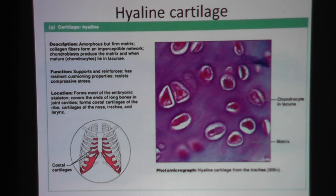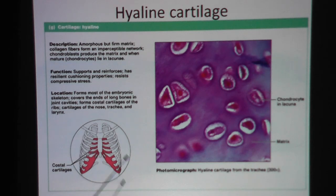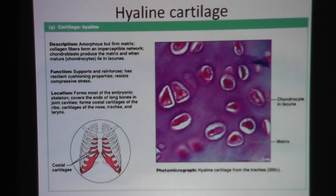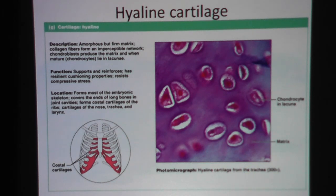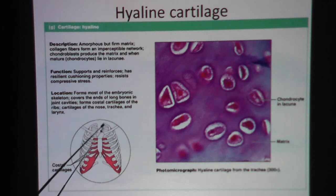Hyaline cartilage is the most abundant in our body. Unlike fibrocartilage where it's only found in a few places, and elastic cartilage which is only found in the ear and the upper glottis, hyaline cartilage is found everywhere else. We started our embryonic skeleton with hyaline cartilage. After birth, we have hyaline cartilage at the ends of long bones in our joints, in our ribs, in our nose, in our trachea, and our larynx — so our airway.